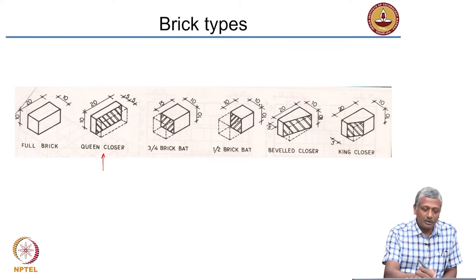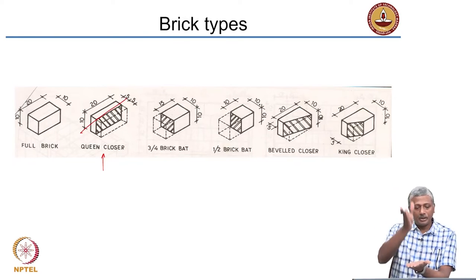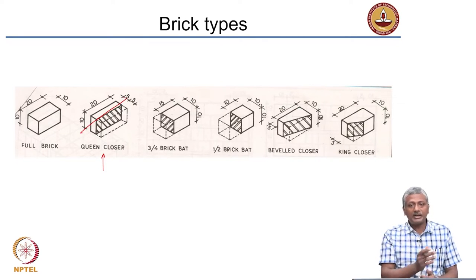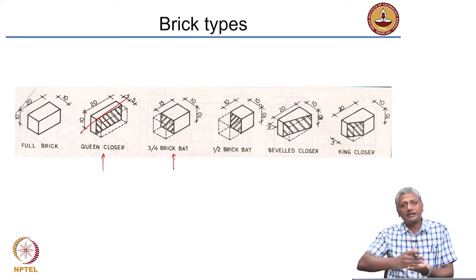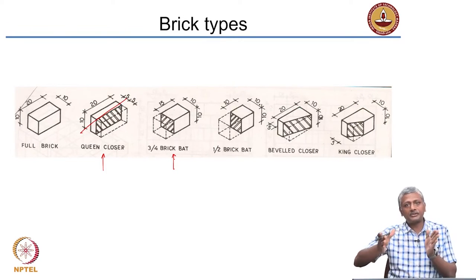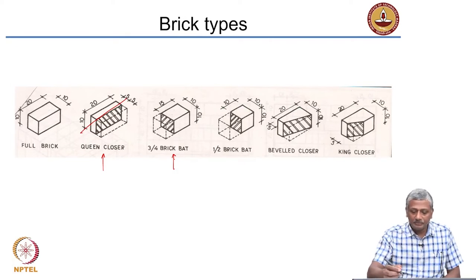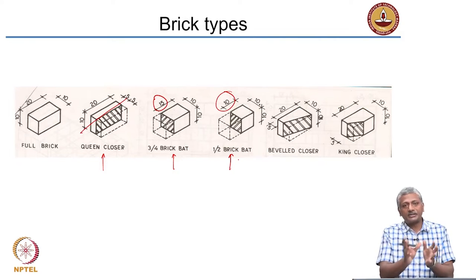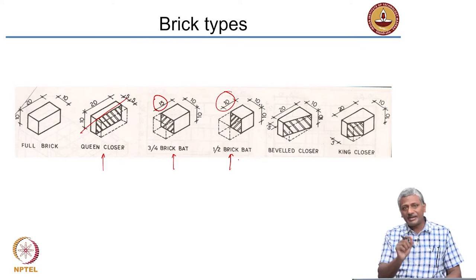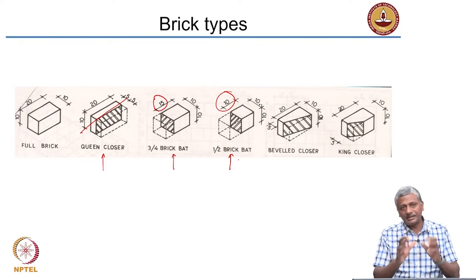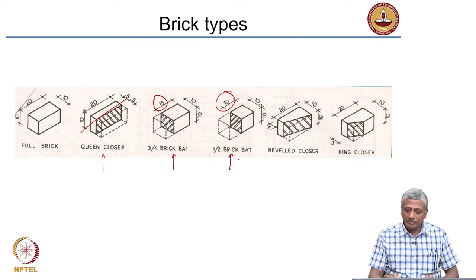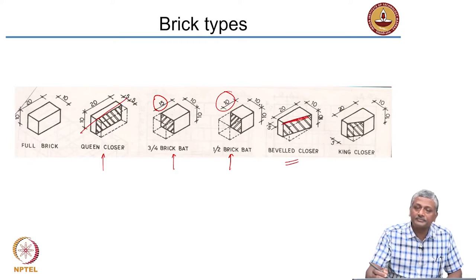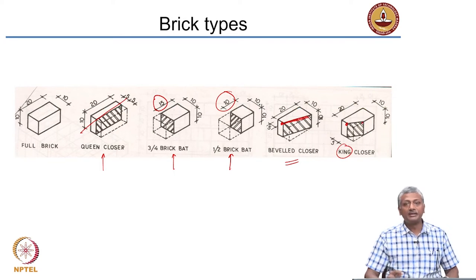The queen closer is a brick that is split longitudinally, giving a dimension of 20 by 10 by 5 instead of 20 by 10 by 10. A brick bat is when you cut the brick in the transverse direction to make bricks of different lengths — a 3/4 brick bat has a length of 15, a half brick bat has a length of 10. You can also have a beveled closer, cut along an incline from the center of one face to the edge of the other, and a king closer, cut from the center of one face to the center of the adjacent face.